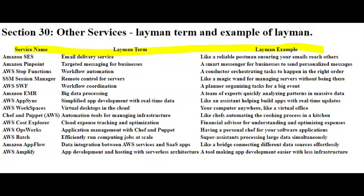Imagine you want to build a website or a mobile app and you wanted to have cool features like user authentication, file storage, and maybe even some artificial intelligence capabilities. Instead of starting from scratch and figuring out how to set up servers and manage all those features, you use AWS Amplify. It's like having a superhero sidekick for your app development. You tell Amplify what features you want, and it takes care of setting up the infrastructure, connecting to databases, and handling all the technical stuff behind the scenes. So you can concentrate on making your app look great and work smoothly without getting bogged down by the nitty-gritty details of server management and configuration.